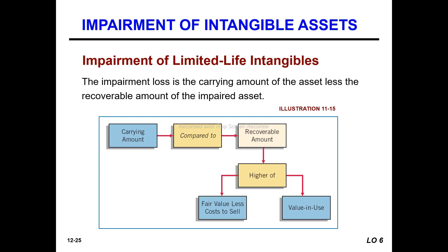Let's review the Impairments of Intangible Asset. Impairment loss is the carrying amount of the asset which is less than the recoverable amount of the asset. The impairment is the carrying value of the asset minus the recoverable amount of the asset.